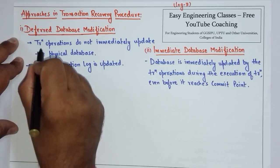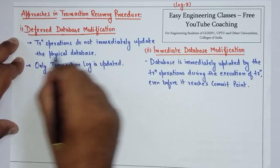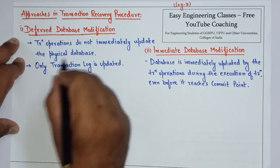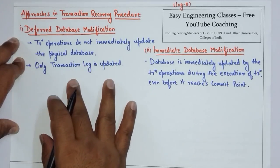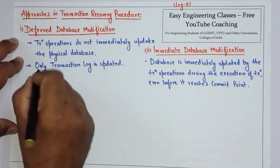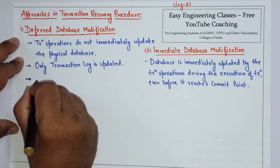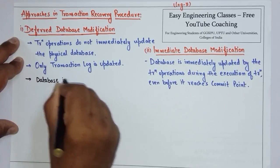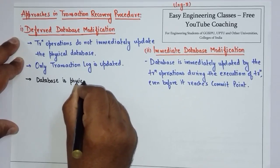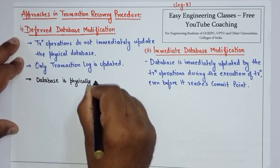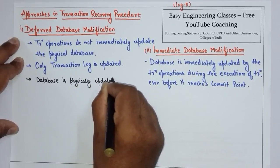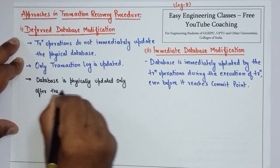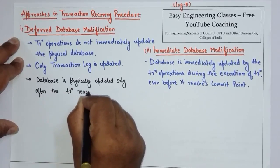Deferred database modification says the transaction operations do not immediately update the physical database. Isme database immediately update nahi hota, rather we update the transaction log. Database is physically updated only after the transaction reaches its commit point.